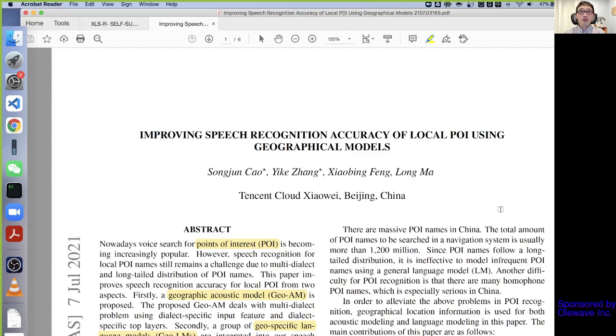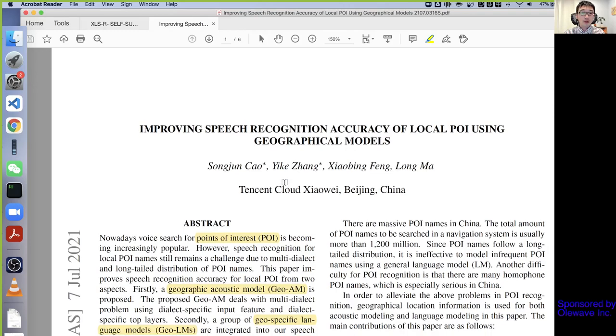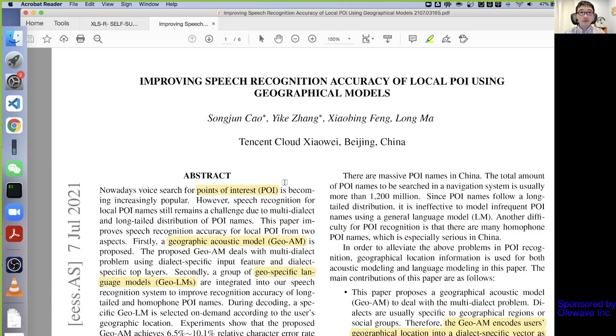Hi guys, welcome to the Speech and Language Technologies meetup. This is the weekly paper reading session. This week we're going to read two papers. The first paper is by Song Joon Ji Chao and colleagues. The paper's title is Improving Speech Recognition Accuracy of Local POI Using Geographical Models. Please feel free to raise your questions or concerns so we can have a discussion. This session is being sponsored by Olay Wave Inc., a speech solution provider.